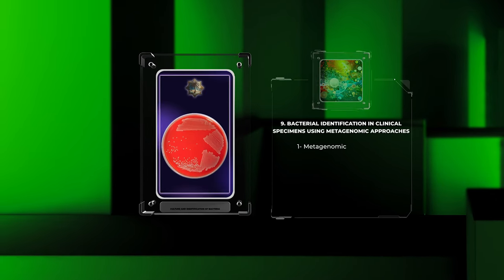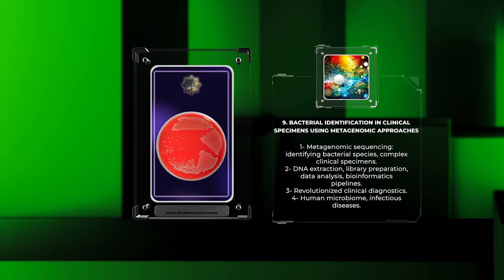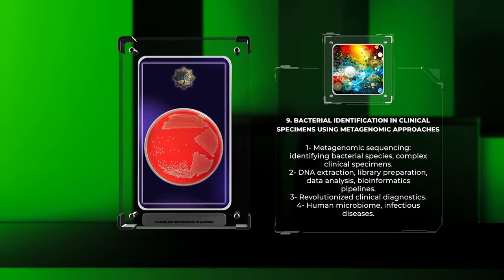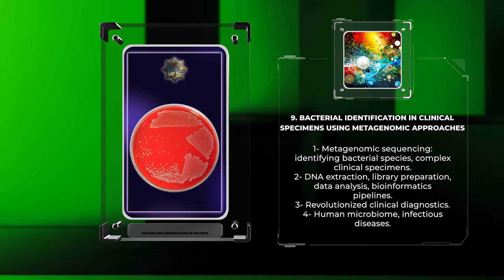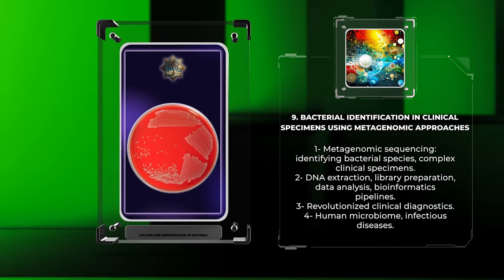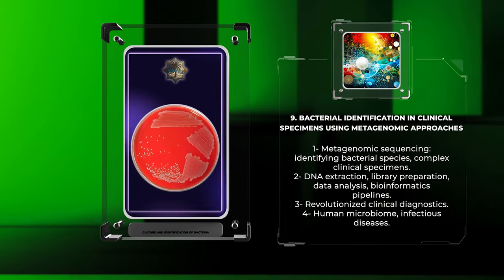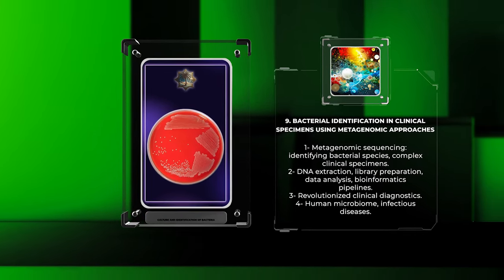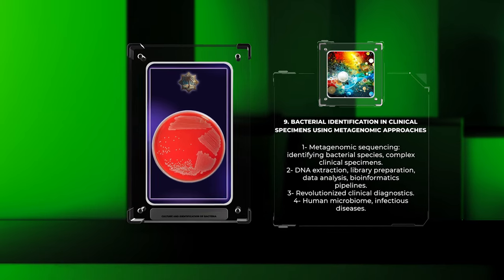Metagenomic sequencing is a powerful method for identifying bacterial species in complex clinical specimens. It involves DNA extraction, library preparation, and data analysis using bioinformatics pipelines to compare sequences with reference databases. This approach has revolutionized clinical diagnostics and provided valuable insights into the human microbiome and infectious diseases.